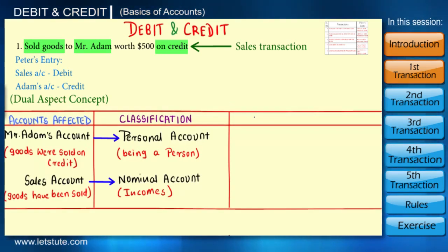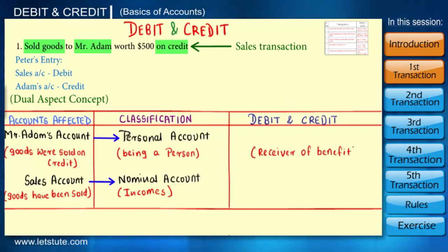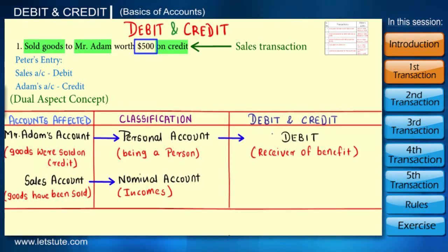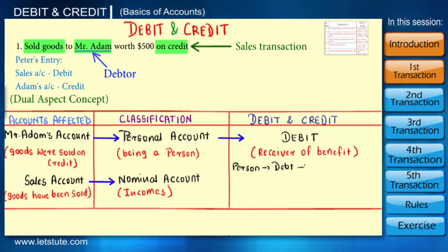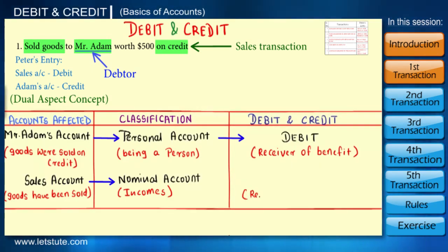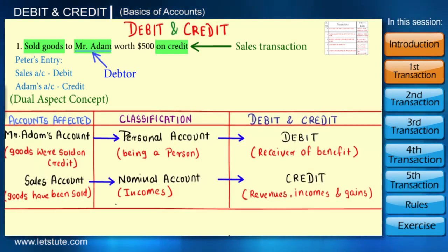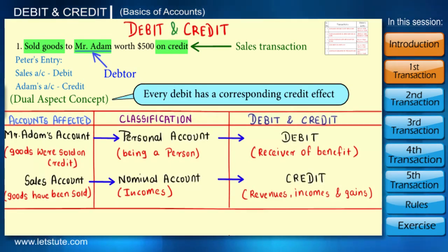Now the question is: which account should we debit and which should we credit? Whenever a person receives a benefit in the form of goods or cash, the account of that person is debited by the amount of the benefit received. So Mr. Adams' account is debited since he is a receiver of the goods — that is, he is the debtor. The person who is in debt, the debtor, is debited. The second account affected is the sales account, which is a nominal account — it's like revenue. All revenues, incomes, and gains increase the profit of the business, so we credit them.